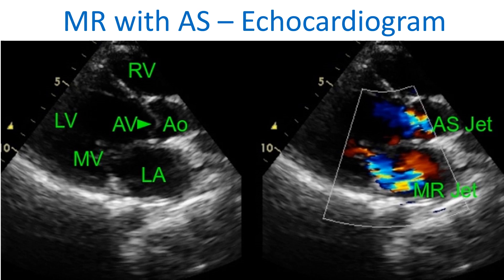RV: right ventricle. LV: left ventricle. AV: domed stenosed aortic valve in systole. MV: closed mitral valve with systolic separation of leaflets causing mitral regurgitation. LA: left atrium. AO: aorta. AS jet: mosaic jet of aortic stenosis in the aorta, preceded by flow acceleration in the left ventricular outflow tract. MR jet: aliased mosaic jet of mitral regurgitation in the left atrium, starting from the closed mitral valve with a little systolic separation of the mitral leaflets.